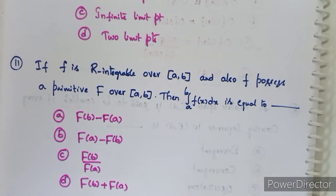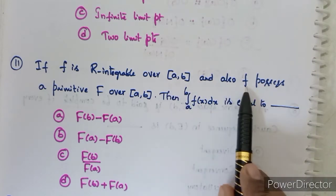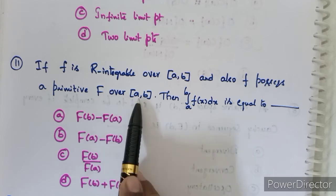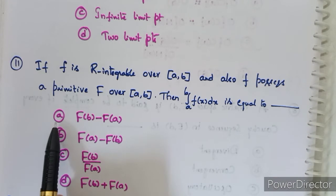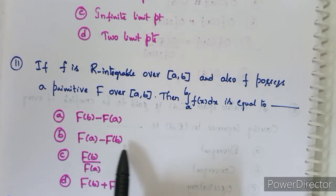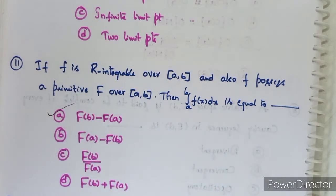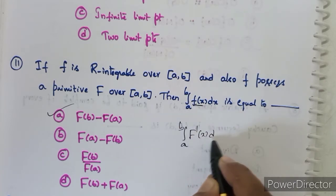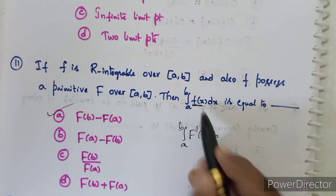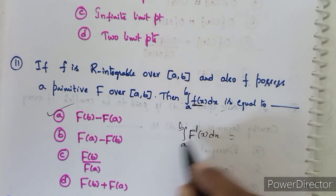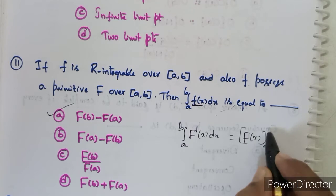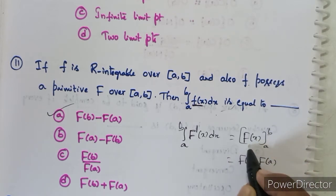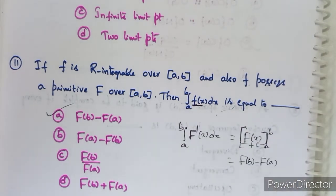Eleventh question: if f is Riemann integrable over closed interval [a,b] and possesses a primitive F over [a,b], then the integral from a to b of f(x)dx equals — F(b) − F(a), F(a) − F(b), F(b)/F(a), or F(b) + F(a)? By the fundamental theorem of integral calculus, we replace f(x) by F'(x), the derivative and integral cancel, and applying upper minus lower limit gives F(b) − F(a). Option A is correct.